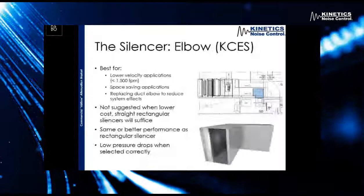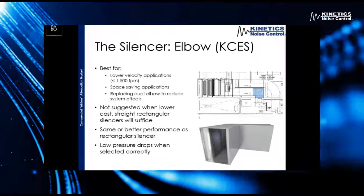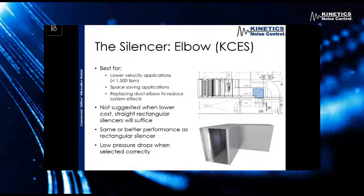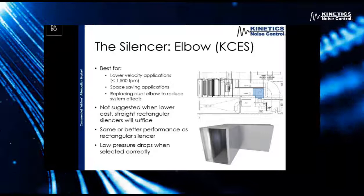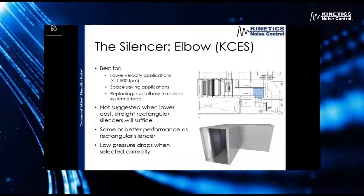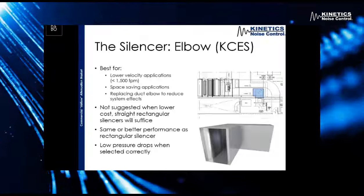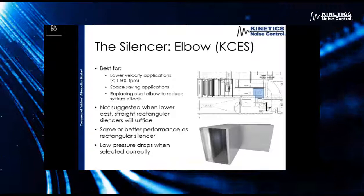Next, we have an elbow silencer. We generally suggest these when a rectangular silencer just won't work, usually due to a space constraint or a poor system effect condition. As you can see in the image on the right, we don't have a lot of room in that mechanical room for a rectangular silencer. This is an application where an elbow silencer really works — generally we can get the same or better performance with an elbow silencer versus a rectangular one. We just have to make some considerations for the pressure drop. They are better suited for lower velocity applications, usually around 1,500 feet per minute or less. Sometimes we'll have a system with two mitered elbows and a rectangular silencer between them — that's a really poor system effect condition. In that case, we would replace one of those mitered elbows with an elbow silencer, which improves the overall system effects.